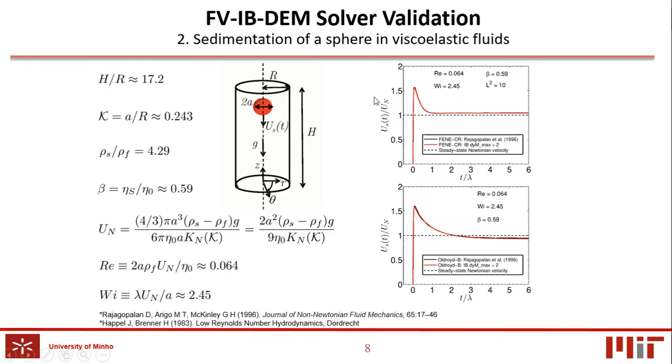The dimensionless velocity of the sphere, U_s over U_n, computed numerically for the viscoelastic fluid described by the single mode Oldroyd-B, on the bottom, and Fene-CR, on the top, constitutive models, is compared with the results obtained by Rajagopal et al. At steady state, the finite extensibility of the fluid controls whether the sphere falls faster than the Newtonian value, U_n, or more slowly.